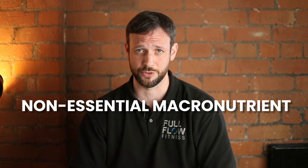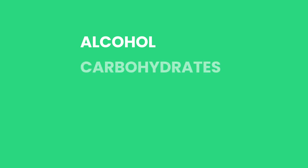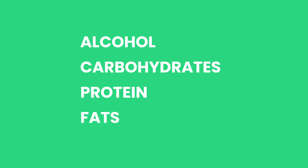Alcohol provides us with a non-essential macronutrient, so unlike your proteins, your carbohydrates and your fats, we don't actually need it. Your body will use the macronutrients you put inside it in a certain order: alcohol will be first when consumed, then your body will use the carbohydrates, then proteins, and then fats will come last.